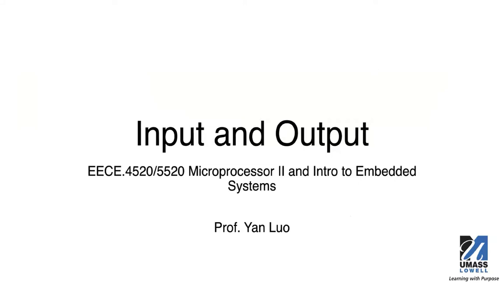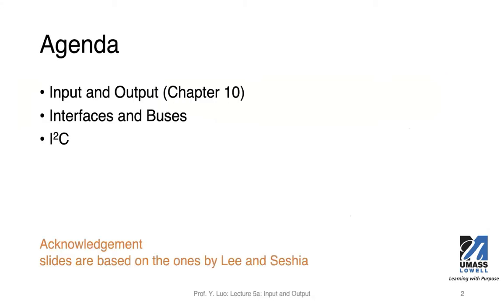We're going to talk about input and output. Input and output are important for any cyber-physical systems, because we will need to interact with the physical world through these input and output mechanisms. From the textbook, you can find relevant materials in Chapter 10.